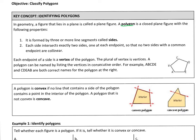So closed means kind of like think of it like a fence - every side is attached to another side. It is formed by three or more line segments called sides, like a triangle has three sides.